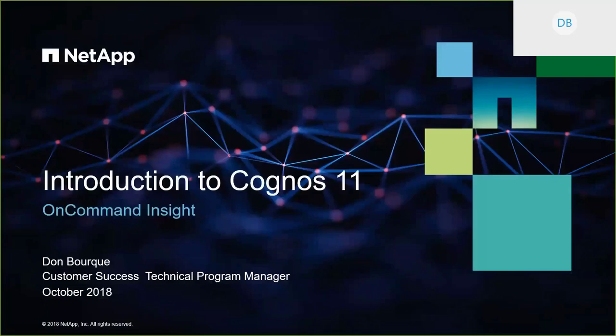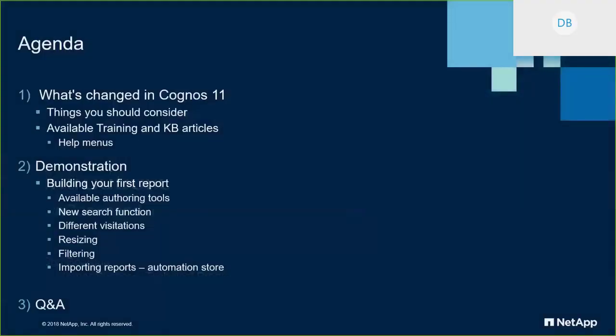Some of you folks on the call may have joined today because you're contemplating migrating to the latest release of OCI, maybe that's 7.3.3 or 7.3.4. Maybe some of you are new to report authoring inside of OCI, or maybe some of you have already upgraded and wondered what the heck happened to everything, where did everything go. So today's agenda I'm going to walk you through. This is a high-level discussion. I may or may not take the entire hour. If not, I'll give you back a few minutes of your day.